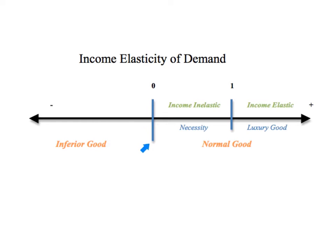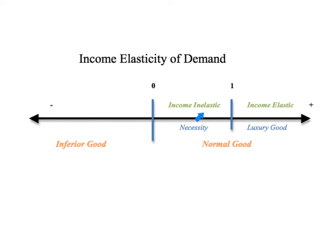On top of that, when we do the equation, we'll also find out the nature of our good — is it a necessity, like bread, or is it a luxury good like a car, something that isn't necessary for our daily lives? If the value of YED is between zero and one, a positive number less than one, then we know that our good is a necessity, and we can expect it to be fairly income inelastic, meaning there'll be a relatively smaller change in demand compared to the percentage change in income. Take a necessity good like bread — it'll be one of the last things we would give up if our income were to fall. So relatively speaking, our demand for bread is going to be inelastic.